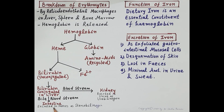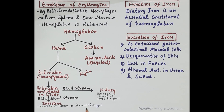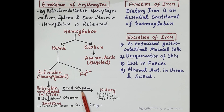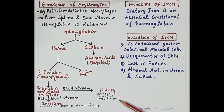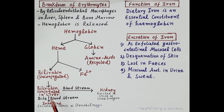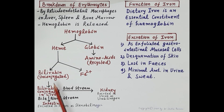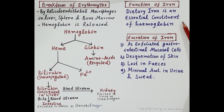Bile is released into the intestine, where bilirubin is excreted in feces as stercobilinogen. Some of this bilirubin spills into the bloodstream, reaches the kidney, and is excreted in the urine as urobilinogen. Thus bilirubin is excreted in the feces as stercobilinogen and in the urine as urobilinogen.